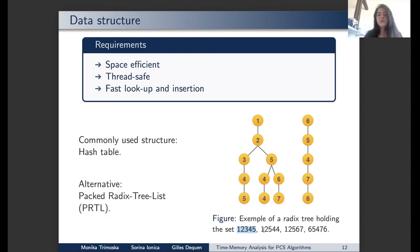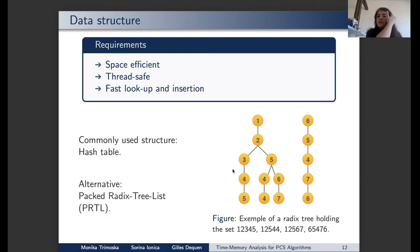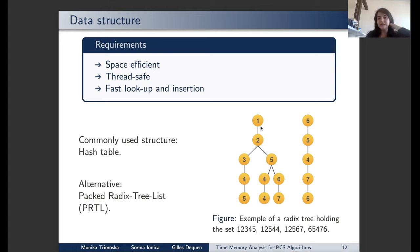For example, we store '12345' and create the node 1-2-3-4-5. Then we store '12544': nodes 1 and 2 already exist, so we just add a child to node 2. We profit from common prefixes without allocating extra nodes. However, this is inefficient at the implementation level because you must create all the structures, pointers, and so on, and it is inefficient when you have many pending leaves. This is why we opted for a hybrid between a radix tree and linked lists.